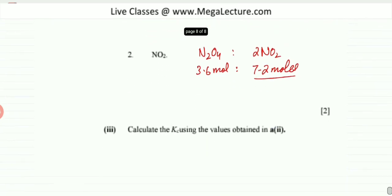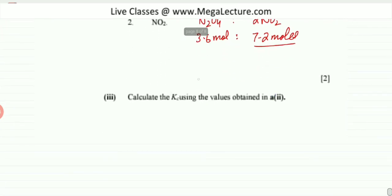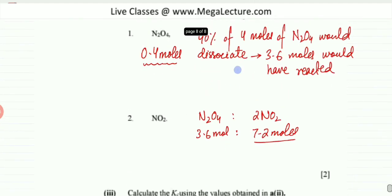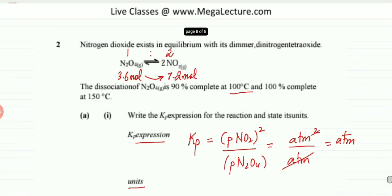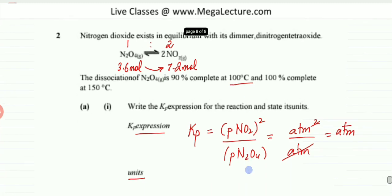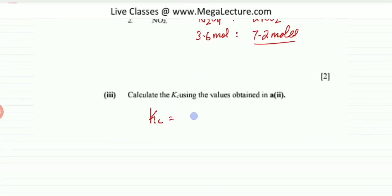The next part asks us to calculate Kc using the values obtained. Kc is the concentration of products over reactants. So it's the concentration of NO2 squared divided by the concentration of N2O4.